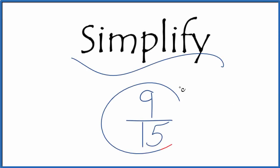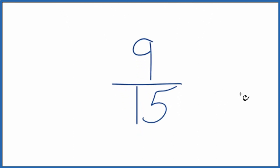Let's simplify the fraction 9 fifteenths. Here's how we do it. We're trying to find another fraction that's equivalent, it has the same value as 9 over 15, it's just that we've reduced it to its lowest terms.